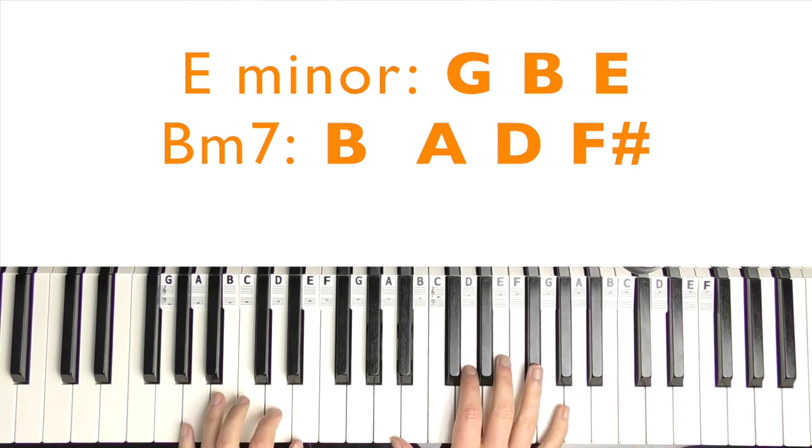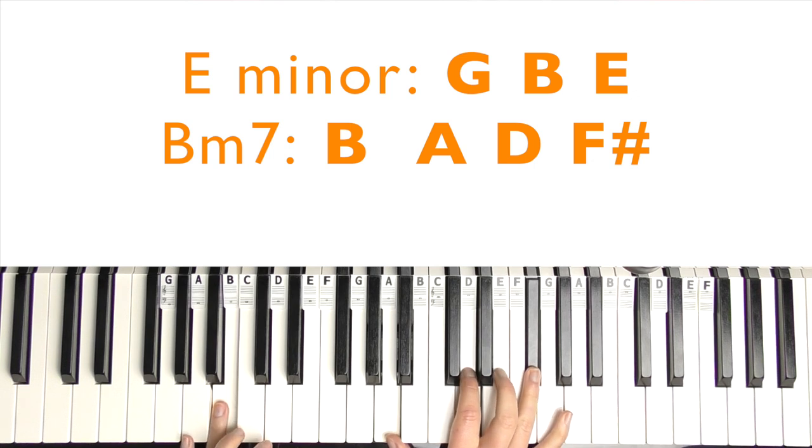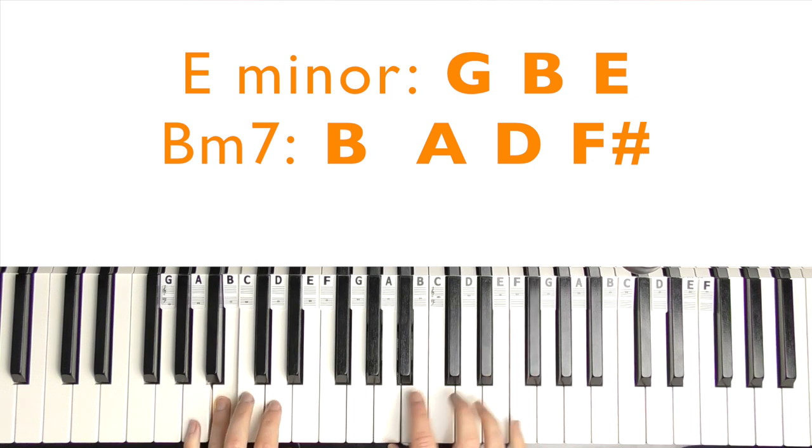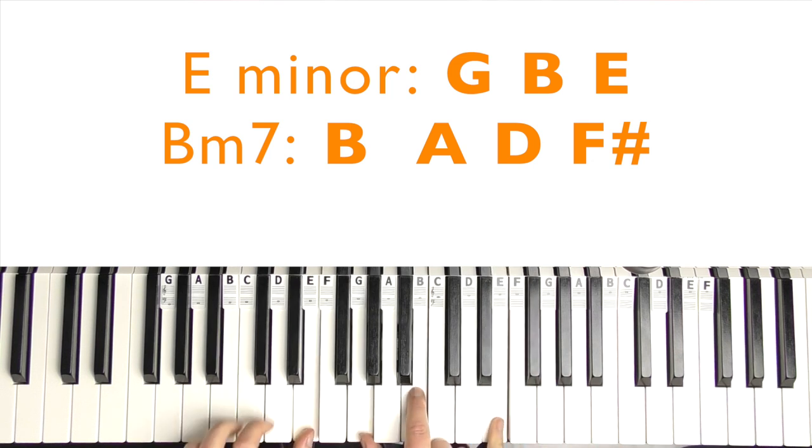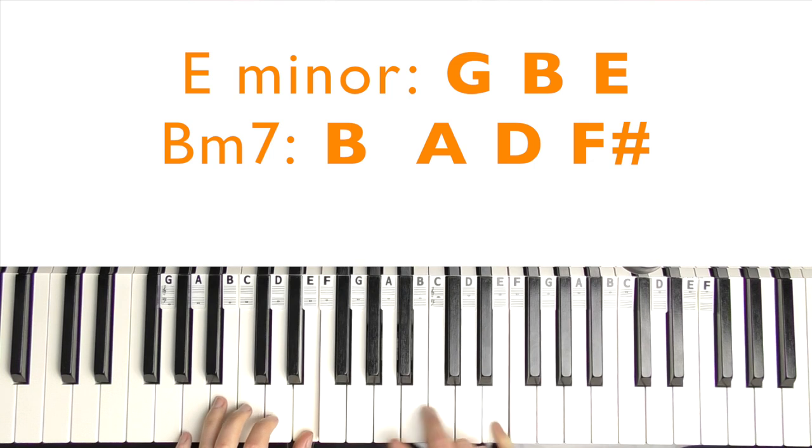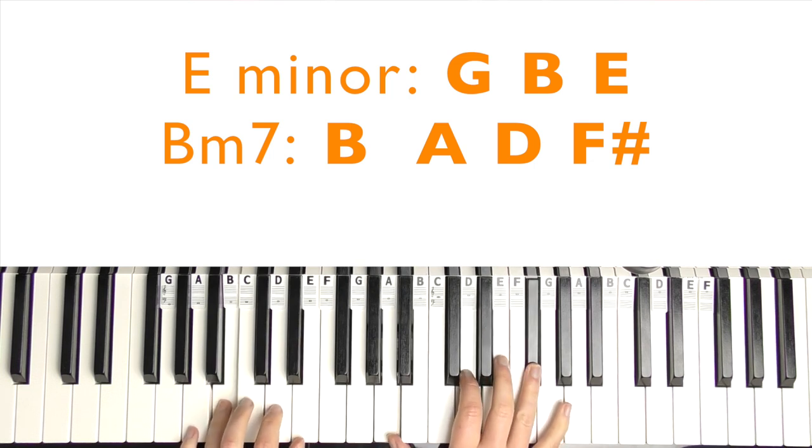And then we have B minor 7. B in the left hand. In the right hand, that's A, D, and F sharp. So again, that's E minor, B minor 7.